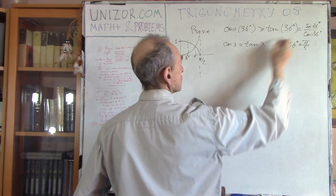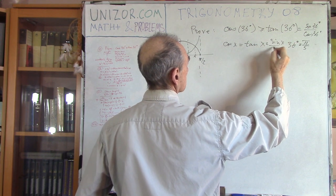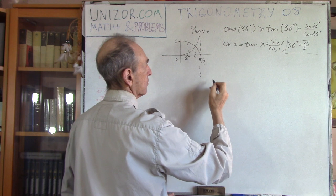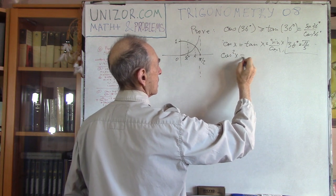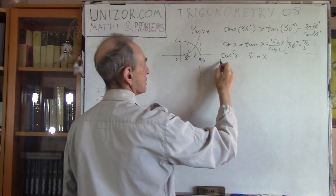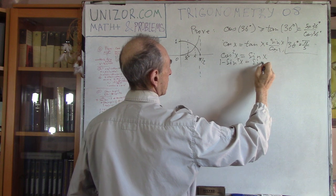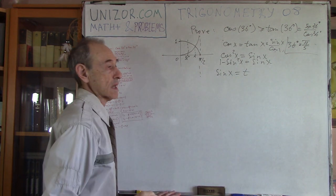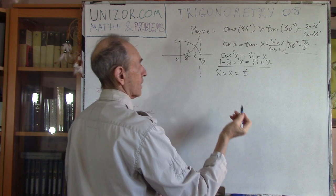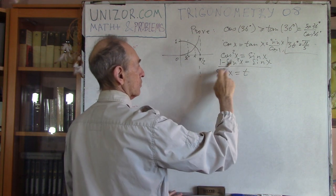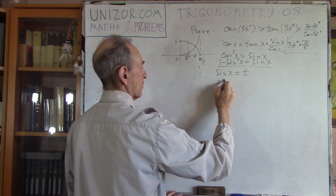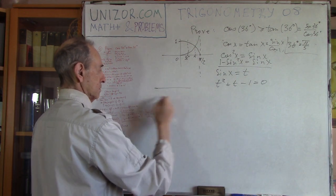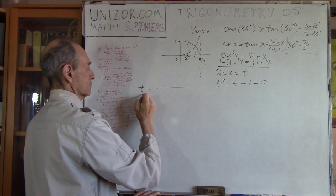How can we solve it? Since tangent is sine x divided by cosine x, we combine cosines and get cosine squared x equals sine x. Since cosine squared is 1 minus sine squared x, we have the equation 1 minus sine squared x = sine x. Assigning t = sine x, this becomes a quadratic equation: t squared plus t minus 1 equals 0.